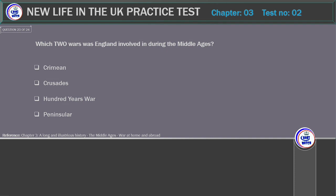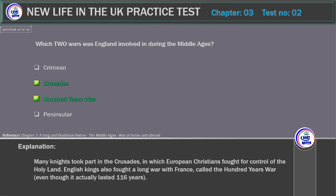Which two wars was England involved in during the Middle Ages? Options: Crimean, Crusades, Hundred Years' War, Peninsula. Correct answer: Crusades and Hundred Years' War. Explanation: Many knights took part in the Crusades, in which European Christians fought for control of the Holy Land. English kings also fought a long war with France called the Hundred Years' War, even though it actually lasted 116 years.